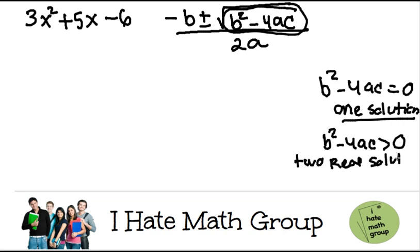And finally, if b squared minus 4ac is less than zero, that means you're going to have two imaginary solutions, or you can also say no real solutions.